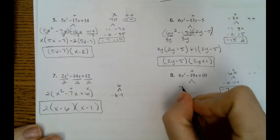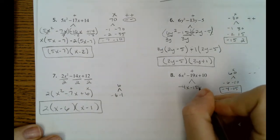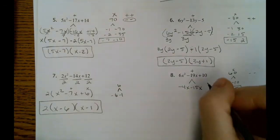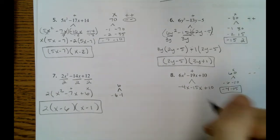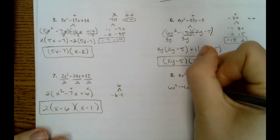So we're going to split that. Negative 19x into negative 4x minus 15x. We keep our plus 10 at the end. We keep our 6x squared at the front. And now we can do our grouping method.